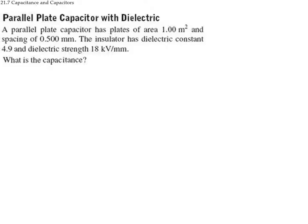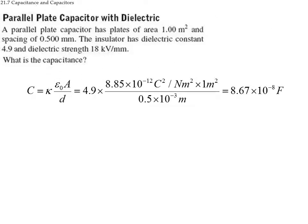For a parallel plate capacitor with plates of area 1 square meter and spacing 0.5 millimeters, with an insulator having a dielectric constant of 4.9, the capacitance is: kappa times epsilon zero times area divided by d. With kappa = 4.9, epsilon zero = 8.85 times 10 to the minus 12, area = 1 square meter, and d = 0.5 times 10 to the minus 3 meters, we calculate the resulting capacitance in farads, which is a small quantity.